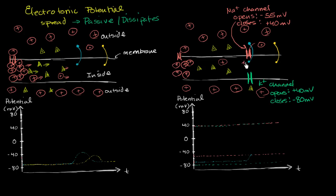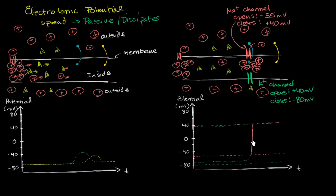So this sodium channel opens because the voltage got high enough, and you're going to have sodium flood in again, spiking up the voltage. The voltage gets more and more positive — sodium flows in for two reasons: it's more positive outside than inside (going down the voltage gradient), and also there's a higher concentration of sodium outside because of the sodium-potassium pump. So it'll want to go down its concentration gradient too, even past the point of no voltage gradient. But then at positive 40 millivolts, this channel is going to close, stopping the sodium flood.